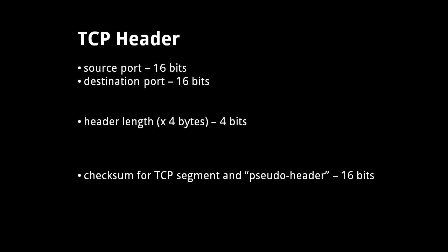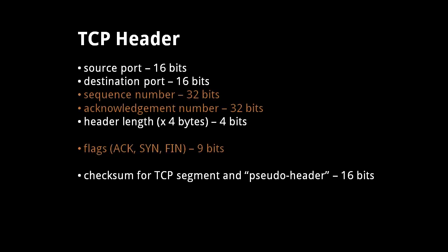Instead, the length of the segment data is inferred from the length of the containing IP packet minus the length of the TCP and IP headers. To provide reliability, a TCP header also includes a sequence number, an acknowledgement number, and a field of nine flags — only three of which we'll concern ourselves with: acknowledge, synchronize, and finish.